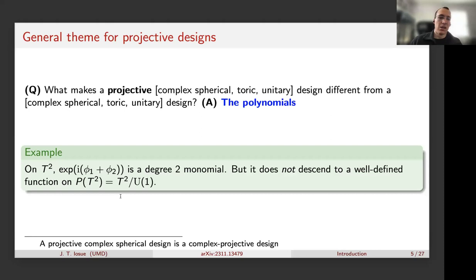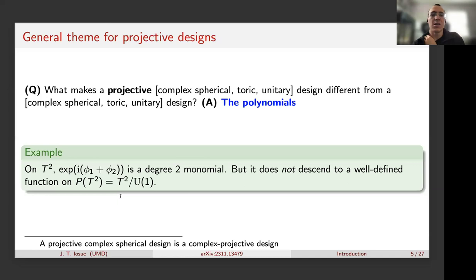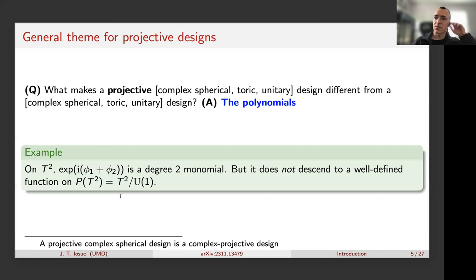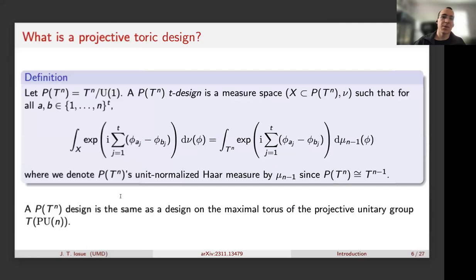The same holds for complex spherical versus projective complex spherical designs, and for unitaries. Fundamentally in quantum, everything you can calculate is always independent of a global phase — we're always working in a projective Hilbert space — and that's why we're almost always only interested in the projective unitary group or the projective sphere.